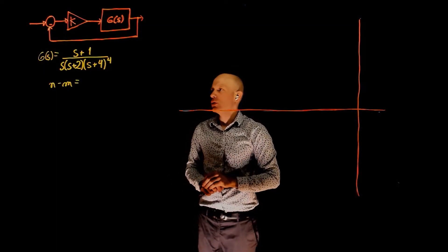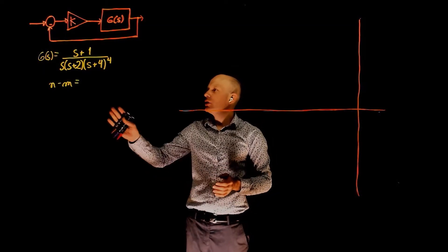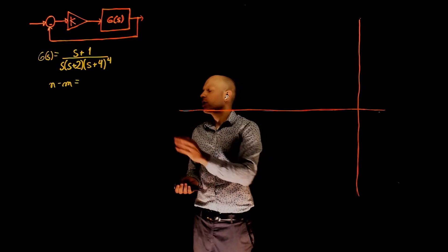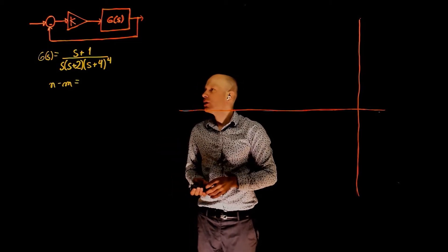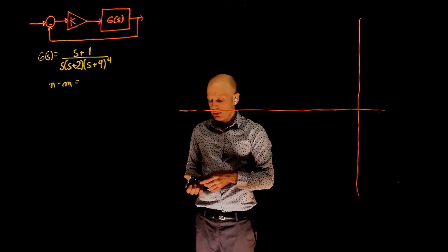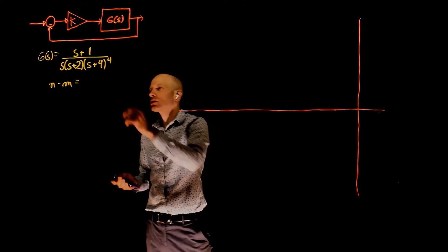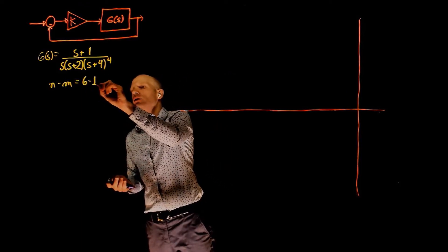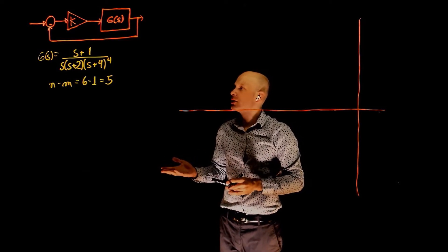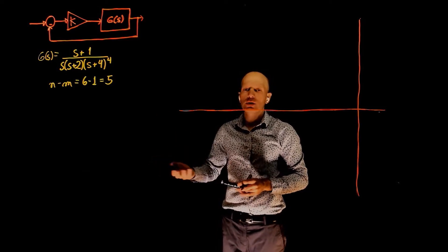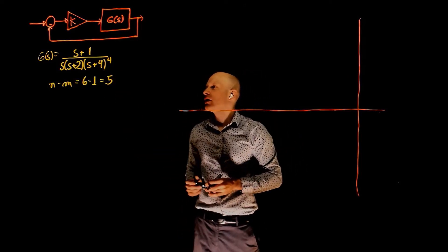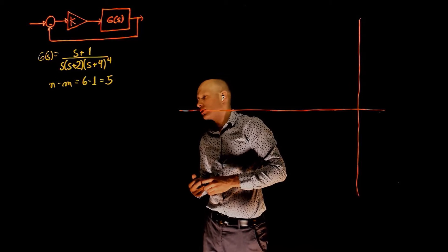Here we have another example of a root locus. In this example, the transfer function is a bit more complicated than the previous examples. We have a total of six poles and one zero only. So n minus m — the number of poles minus the number of zeros — is 6 minus 1, that is 5. We now have five asymptotes that will take some of the poles to infinity, and we also have four poles at negative 4. This is going to be an interesting root locus to draw.